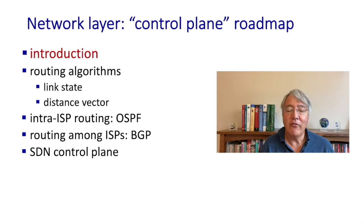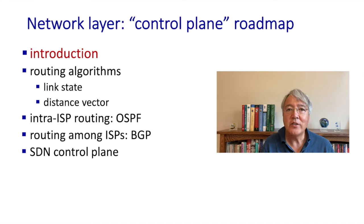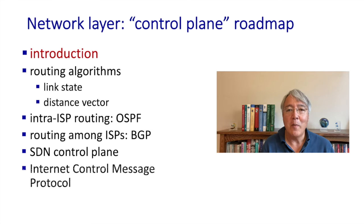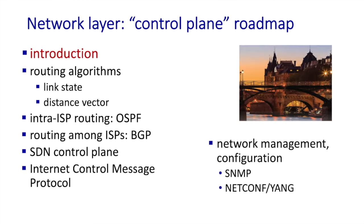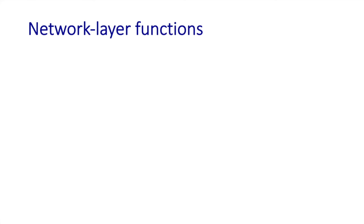Following routing algorithms and protocols, we'll take a look at software defined networking — the principles involved in logically centralized controllers for SDN — then two SDN controllers: the OpenDaylight controller ODL and the ONOS network controller. Then we'll look at ICMP, and wrap up with network management and configuration, covering SNMP, NETCONF, and YANG. As we proceed through chapter 5, it's a good idea to keep in mind the distinction between forwarding, covered in chapter 4, and routing, which we'll be covering now.